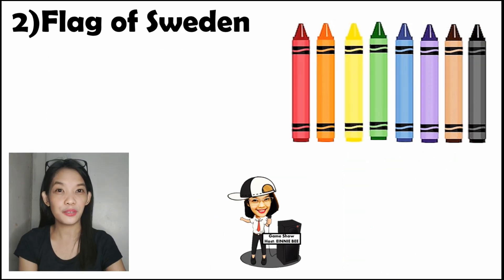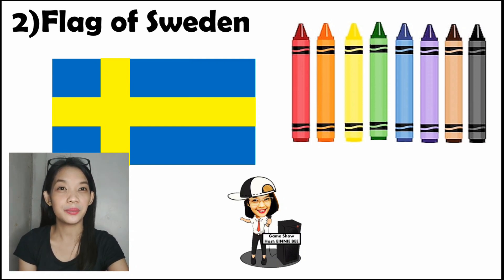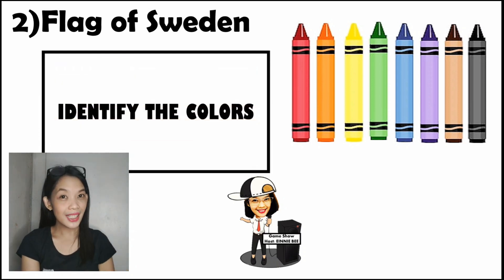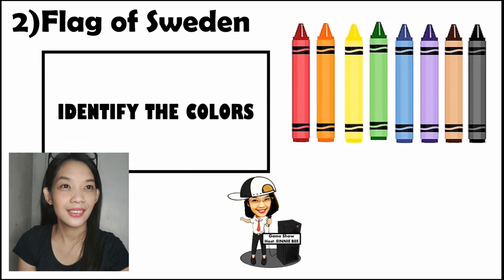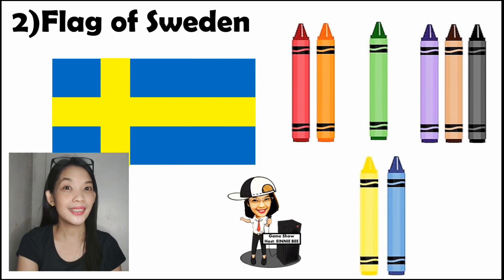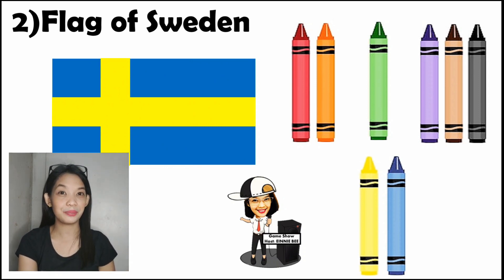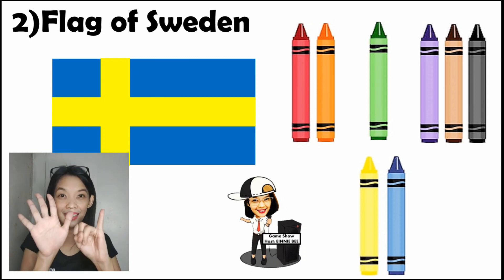Flag of Sweden. Identify the colors. That's correct! We have blue and yellow. How many colors were present? We have 2. And how many colors are not? That's correct! We have 6.